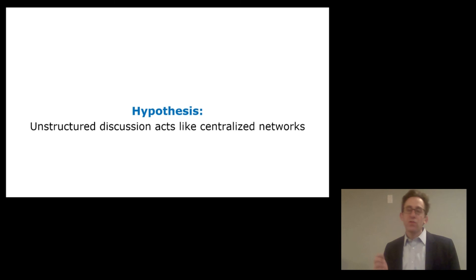Let's talk about how that happens. Suppose that this diagram represents a statistical distribution of beliefs. The x-axis is those beliefs, and the y-axis is how popular they are. Let's say the red line shows the average belief of the group at the beginning of the conversation. Let's say the blue line shows where the actual true answer is. In this example, 20% of the people are on the truth side of the average, and 80% of the people are on the incorrect side of the average.